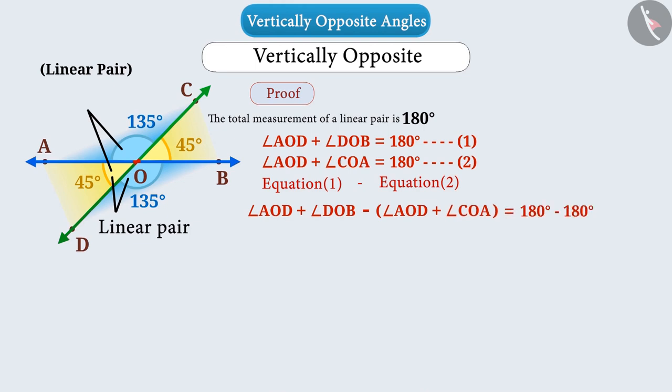That is, angle AOD plus angle BOD minus angle AOD minus angle COA is equal to 0. That is, angle DOB minus angle COA is equal to 0.